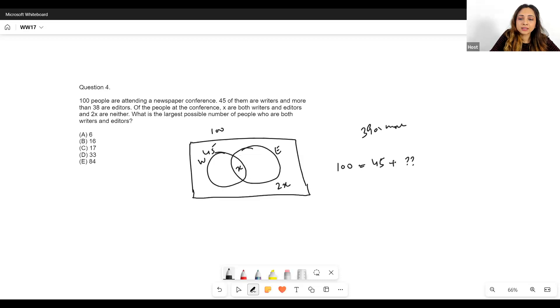Plus this circle, my editor circle - I don't know what exactly it is, I'll just put a question mark - then minus both. This is my standard sets formula. Total is equal to A plus B minus both plus neither.